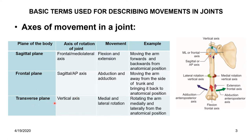Along the transverse plane, the axis is the vertical axis. The movements that are possible are medial rotation and lateral rotation. Rotating the arm medially is medial rotation, and rotating it laterally from the anatomical position is lateral rotation. Now you know about the planes, the corresponding axes, and the movements with examples.